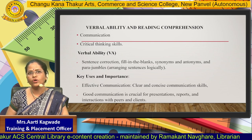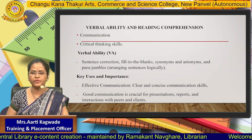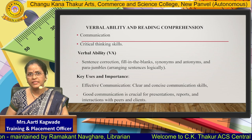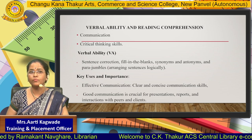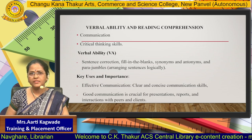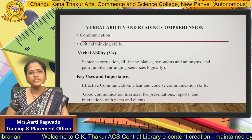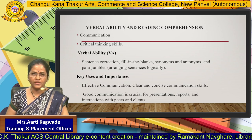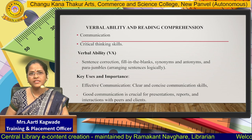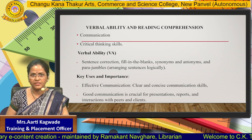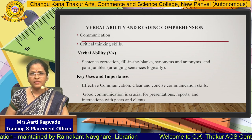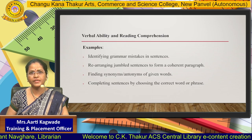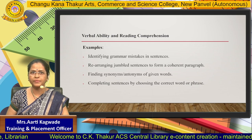Let us understand in detail what each section comprises. First is verbal ability and reading comprehension. These questions would judge you on your communication and critical thinking skills. Why are these skills required? When you work in groups and teams, you require good, clear and precise communication. Sample questions would be sentence formation, sentence correction, finding grammatical errors, and so on. These are examples of verbal ability and reading comprehension.